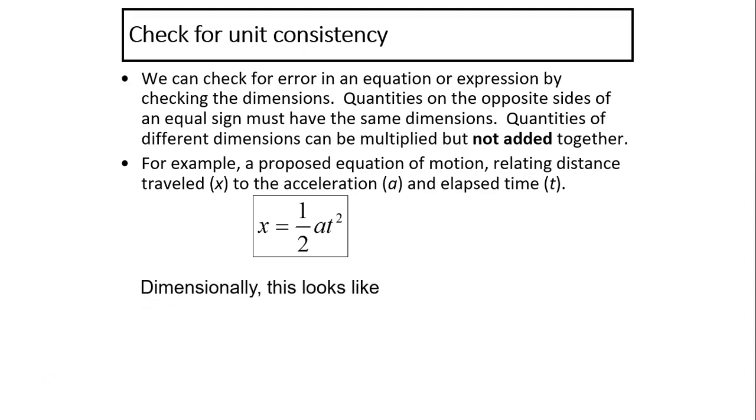The dimension on the left is x, which is the distance, so the dimension is L. The dimension on the right is one half a t squared. One half has no dimension. The dimension for a is L over T squared and the dimension for t is T. So the dimension on the right is L over T squared times T squared, also L. So these two are equivalent.